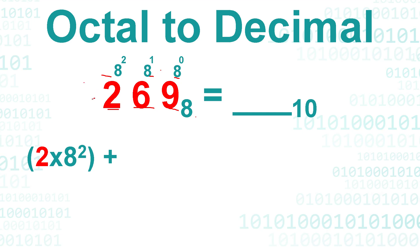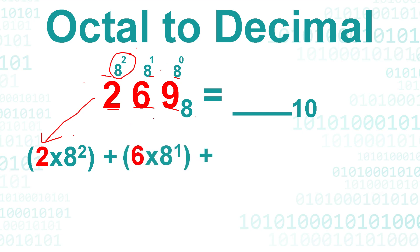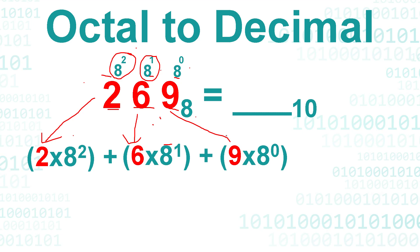We will get the digit 2 here, and since it is the first position we will copy 8 raised to the power of two. Next we have to get the number 6 here, then 8 raised to the power of one, and then number 9 with 8 raised to the power of zero.